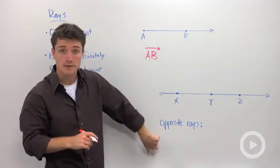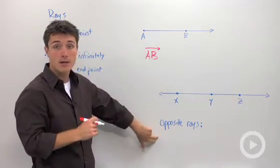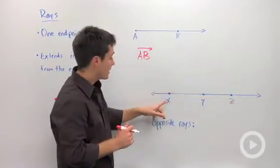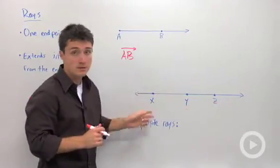Now you can also have opposite rays, and opposite rays share a common endpoint. So if you look at this line right here containing X, Y, and Z, where X, Y, and Z are all collinear,